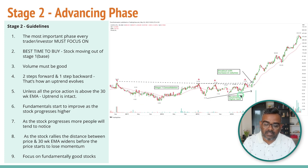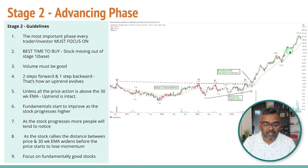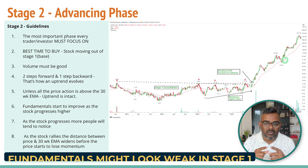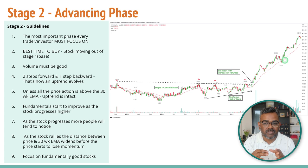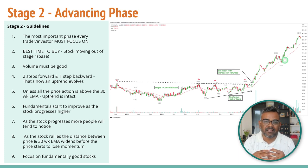In a stage one consolidation base, the fundamentals are usually not yet improving. The stock breaks out, and that's when fundamentals start improving — but not many will notice it yet. A lot of people will start talking about the stock only when it has already risen quite a lot. If a stock is breaking out from stage one into stage two but the fundamentals don't look great yet, that's typical — the markets are always ahead of you. The market will know if results are going to come good and the stock will already start moving higher.